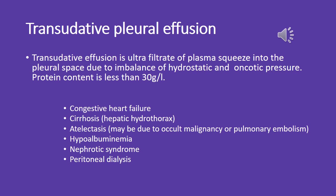Transudative effusion is an ultrafiltrate of plasma squeezed into the pleural space due to an imbalance of hydrostatic and oncotic pressure. Protein content is less than 30 g/dL, and it can be seen in congestive heart failure, cirrhosis, hepatic hydrothorax, atelectasis — possibly due to occult malignancy or pulmonary embolism — hypoalbuminemia, nephrotic syndrome, and peritoneal dialysis.